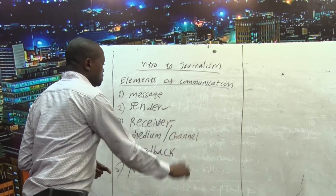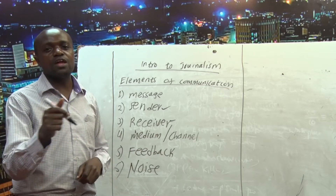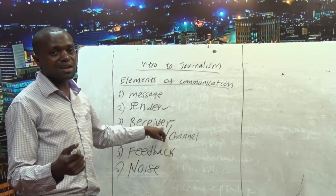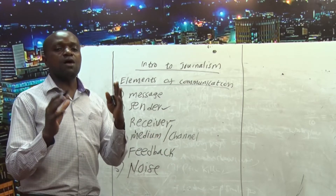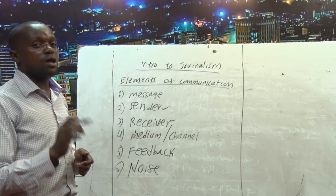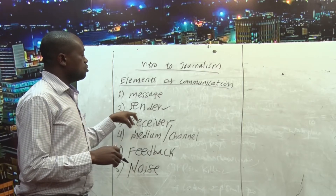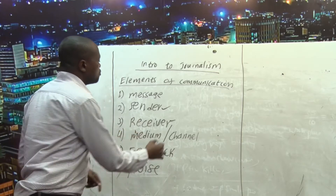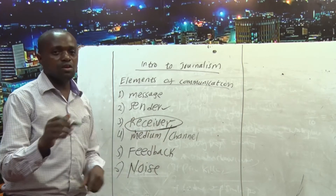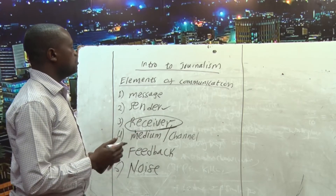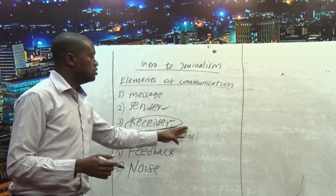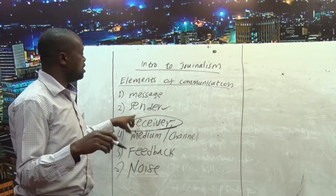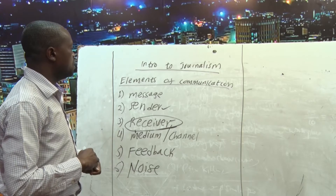After the sender, we have the recipient — the receiver of the message. The receiver is simply someone who decodes the encoded message. Once the sender sends a message, he expects the receiver to understand it, and the only way to understand the message is by giving it the most appropriate meaning. If you cannot give the message a meaning, you are likely to give a negative feedback. Communication is only effective when the receiver understands the meaning of the message disseminated by the sender. The receiver and the sender must always be on the same page in order to understand each other.